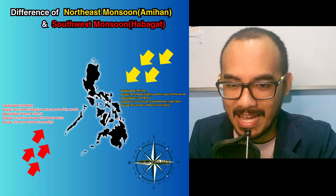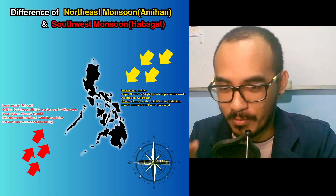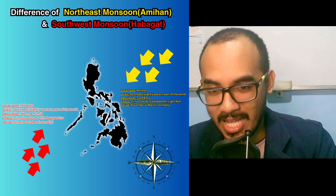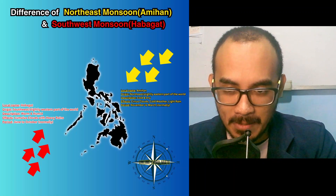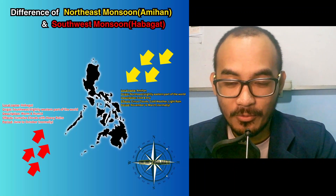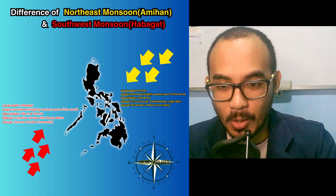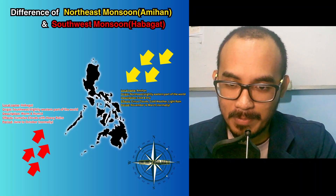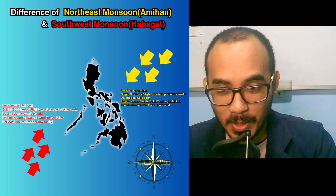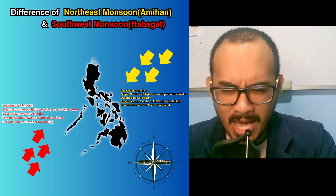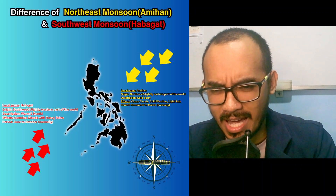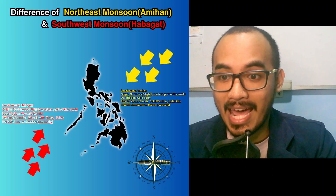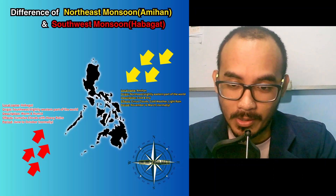Subject: Amihan versus Habagat. In meteorology, Habagat and Amihan refer to seasonal wind patterns in the Philippines and other parts of Southeast Asia, significantly affecting the region's climate and weather conditions.